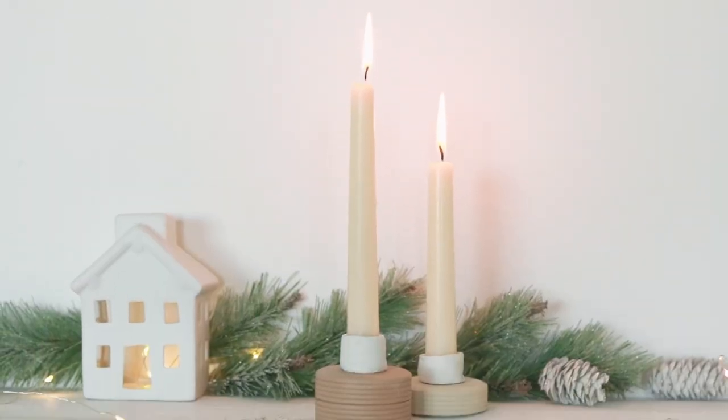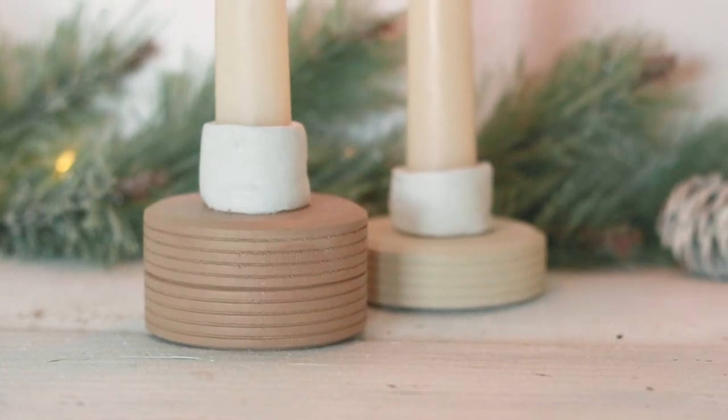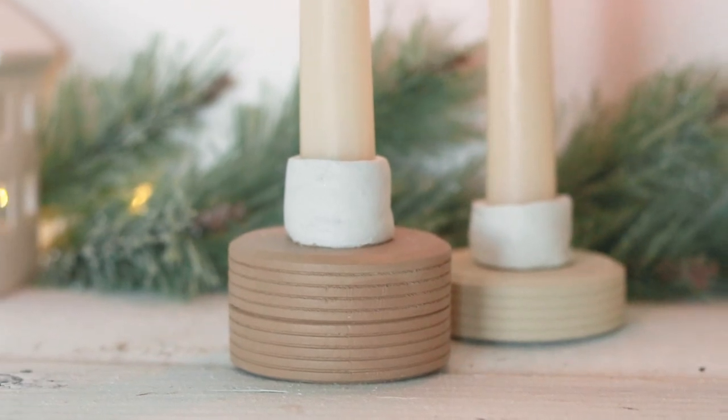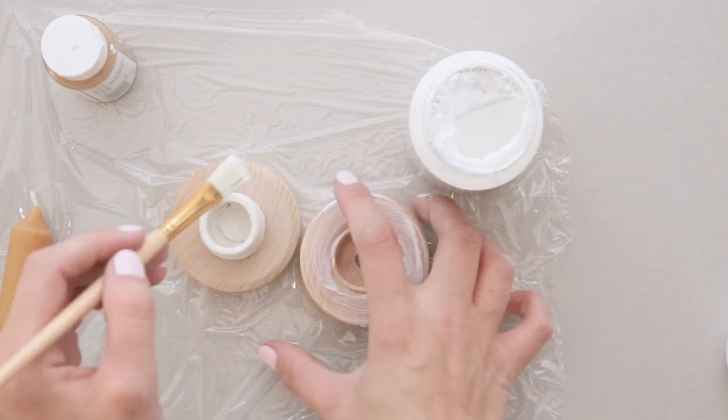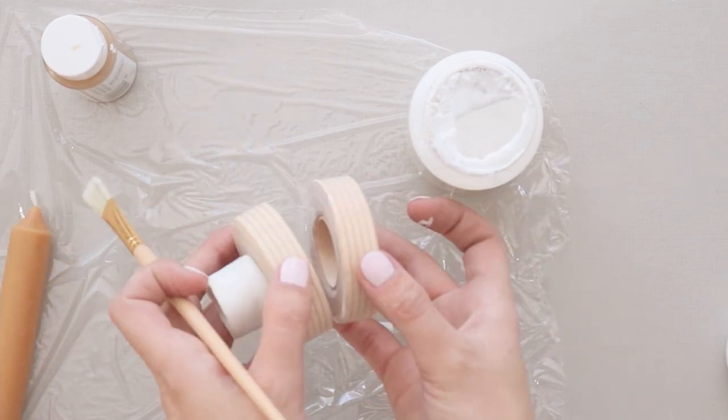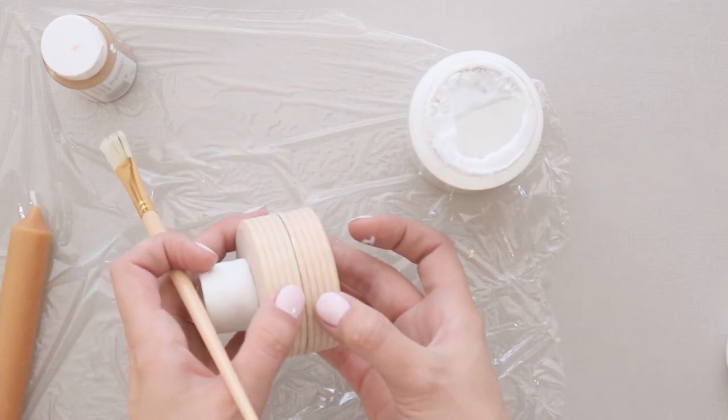If you like a more simple style, which I'm usually drawn to more, you could just leave them simply white without the gold leaf and stack the wood discs to get different heights on your candle holders. There are just so many possibilities with this, and I had so much fun making this DIY.